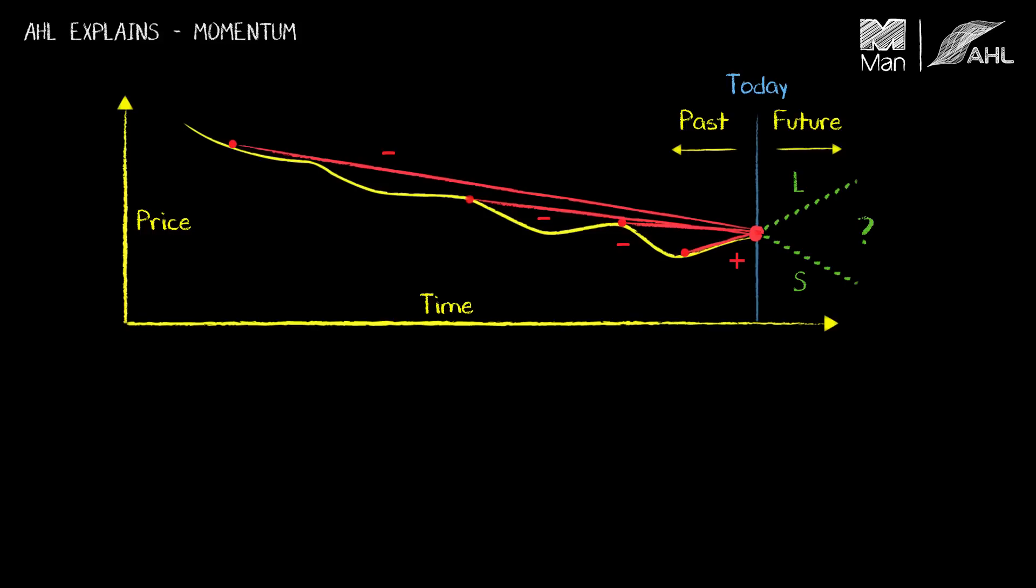They look at trends over a range of time horizons and combine them in some way. So let's think about how we might do that. So if I take the slope lines here and write them out, I've got a negative trend over two months, a negative trend over one month, a negative trend over two weeks, and a positive trend over one week.